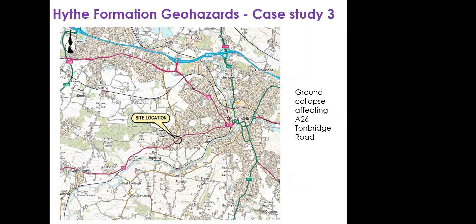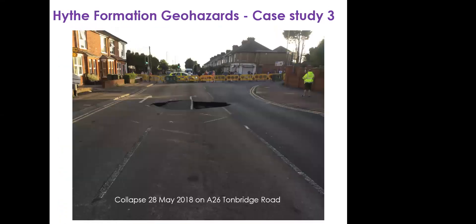Case Study 3 occurred at a very inconvenient location — the A26 Tonbridge Road, at the major traffic-light junction where a B road goes north out of Maidstone through Barming. The collapse occurred on the bank holiday weekend of 20th May 2018. The road normally carries tens of thousands of vehicle movements per day; it was closed to traffic, a nearby terrace of houses was evacuated, and businesses on the adjacent side were temporarily closed.